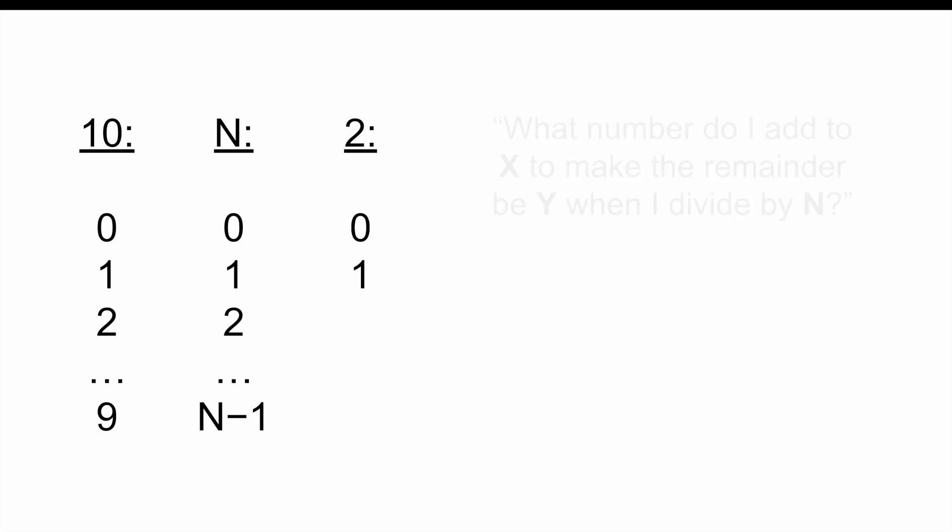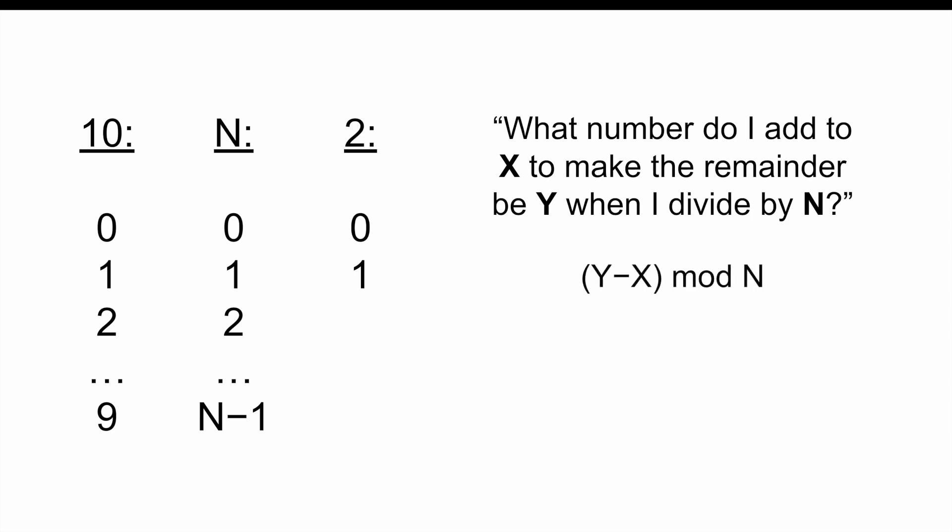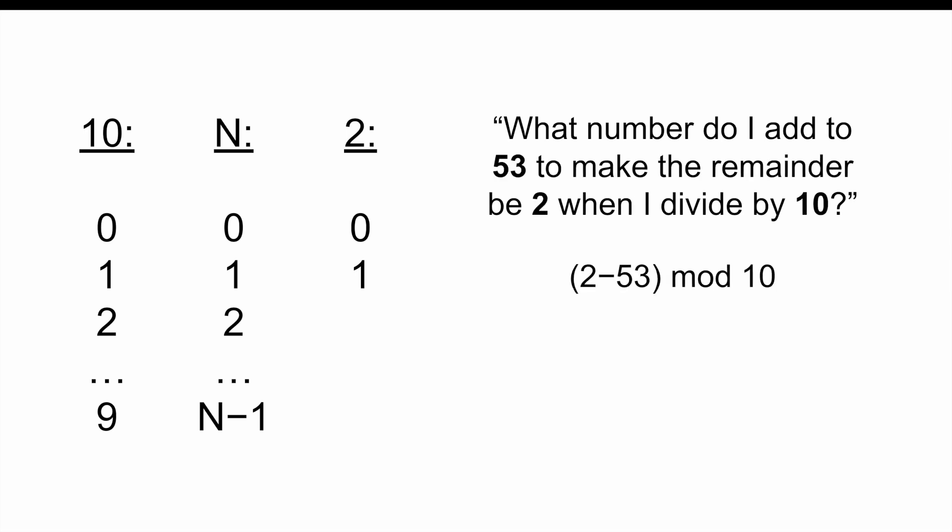Also, we kept asking throughout this video, what number do I add to x to make the remainder be y when I divide it by n? The mathematical shorthand representing that concept is called (y minus x) mod n. So for example, when we said something like, what number do I add to 53 to make the remainder be 2 when I divide by 10? That was just asking, what's (2 minus 53) mod 10? And the answer, of course, was 9.